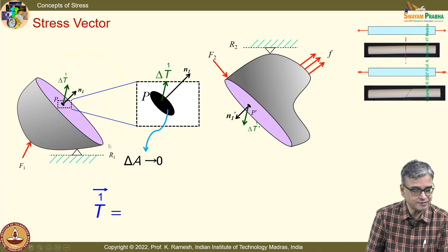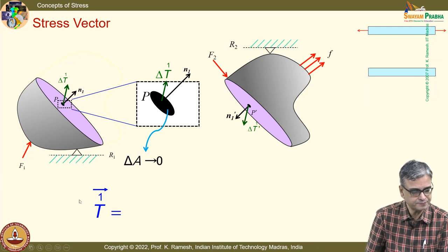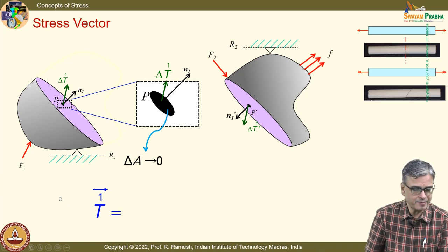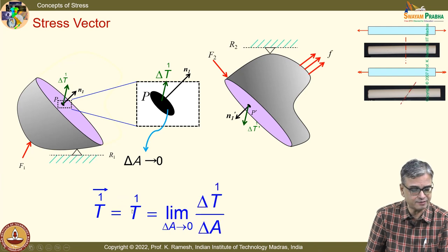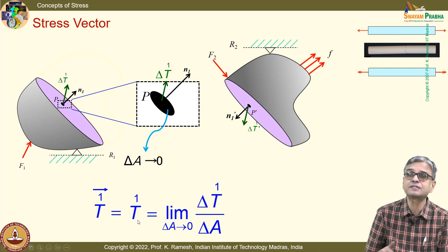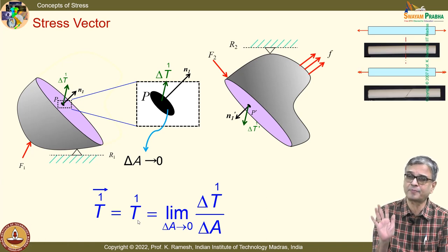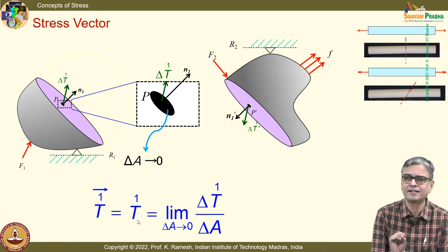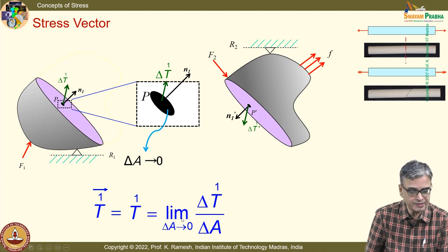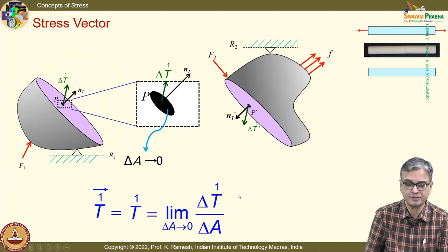Following what we saw in Hooke's experiment and Bernoulli's improvement, we defined the quantity force divided by area for the small area, in the limit as δA tends to 0. We coined the new symbol T-cap-1. When I say 1, it refers to plane 1, defined by outward normal. The cap symbol indicates it is a vector; if there are subscripts, you look at it as a component. The definition is: the stress vector acting on plane 1 is limit δA → 0 of δT₁ / δA.